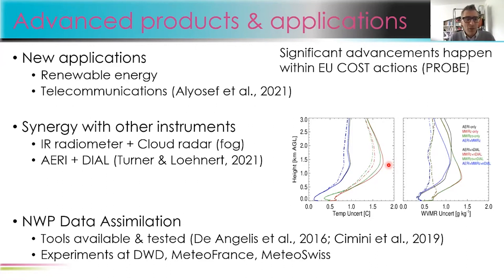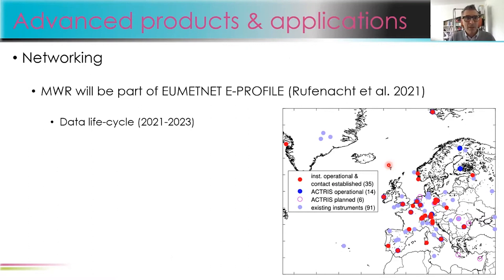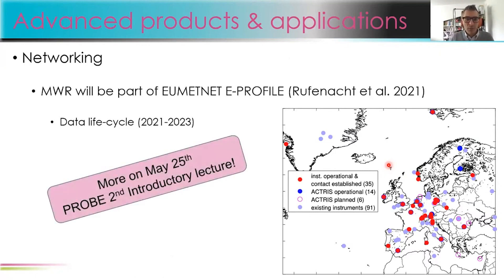Finally, numerical weather prediction data assimilation is really boosting now because tools were made available and tested, and there are now experiments at DWD, Météo-France, and MeteoSwiss at least. Regarding networking, microwave radiometers will be part of the UMetNet E-PROFILE program — the profiling program of the European network of met services — and the data life cycle will be worked out in the next two years. More about this will be covered on May 25th when we talk about networks in the PROBE introductory lecture.